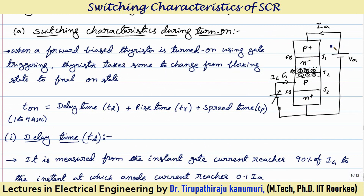This PN junction will be forward biased, similarly this PN junction also is forward biased — that means junction J1 and J3 are forward biased. But junction J2, because this N is positive with respect to P due to the applied voltage dropping across the three junctions depending on the resistance offered by them — that is why J2 is reverse biased and will not allow the current to pass.